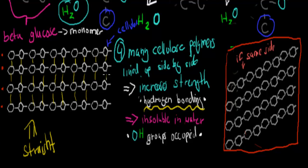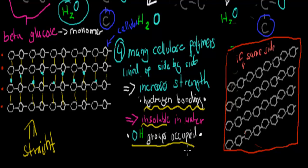By being so closely packed, you get hydrogen bonding between the chains, which is another important structural feature. The remaining OH groups between the chains are being occupied by hydrogen bonding, so they can't take part in dissolving. This makes cellulose even less soluble — it can't dissolve at all in water. This is really important because if plant cell walls dissolved, the whole tree would dissolve.